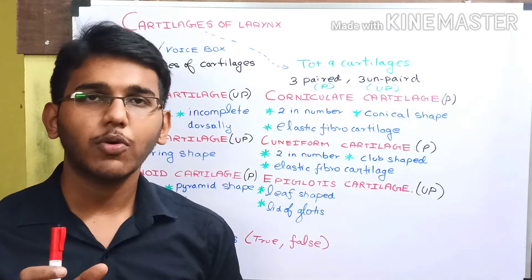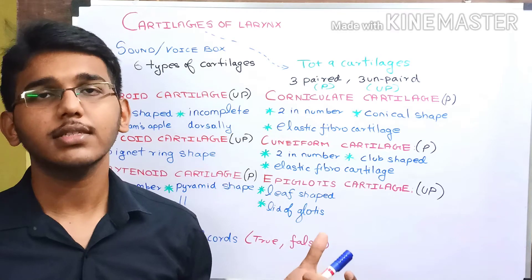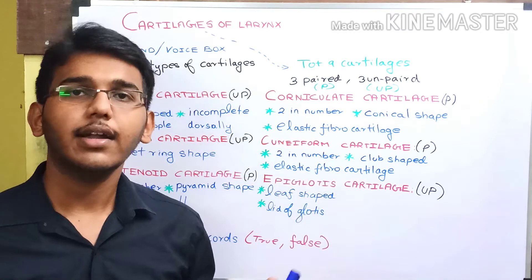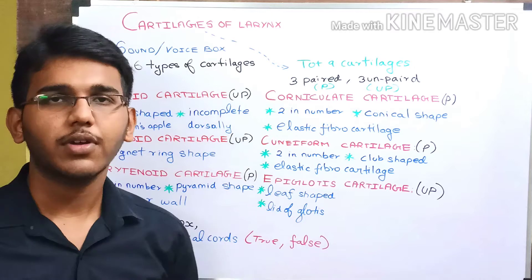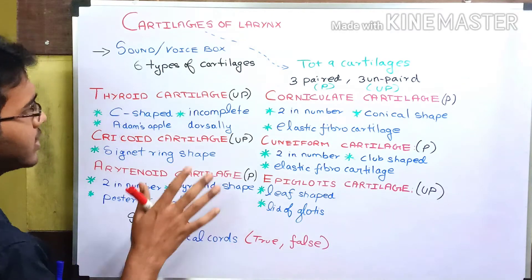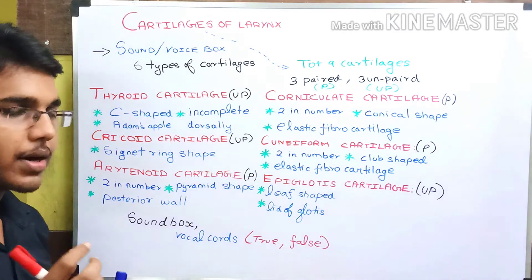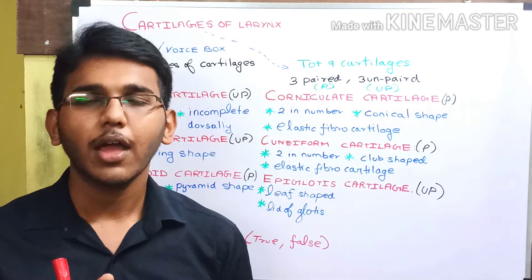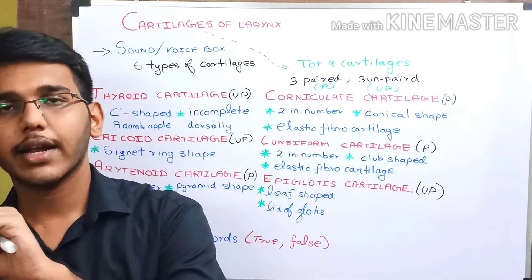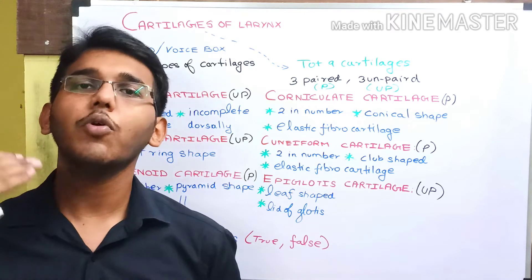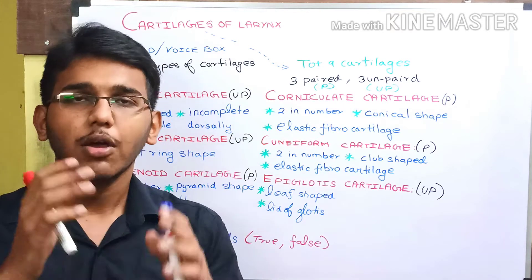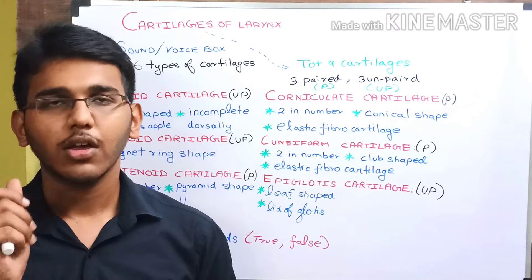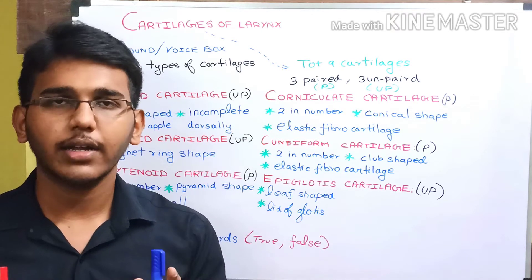In this video we will discuss the 6 types of cartilages and a trick to memorize their names. Before that, we must know what a cartilage is. A cartilage is a soft connective tissue, whereas bones are hard connective tissue, making bones comparatively harder than cartilage. Both are responsible for the structural organization of the human body.